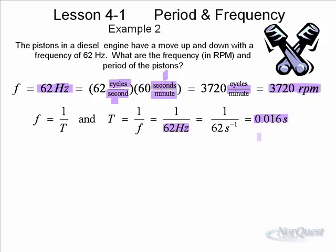So frequency and period. Notice the two types of frequency, Hertz or RPMs. These are equivalent, but certainly look different. And the period is 0.016.